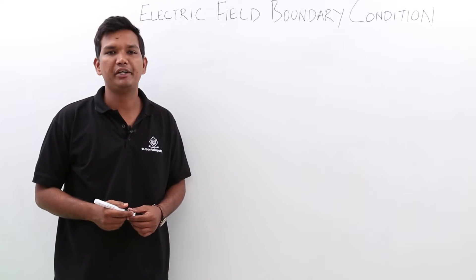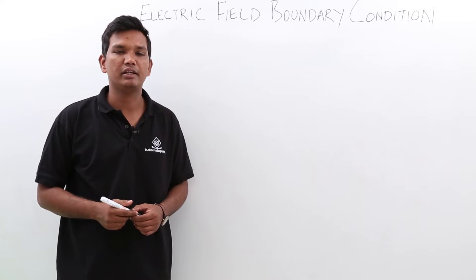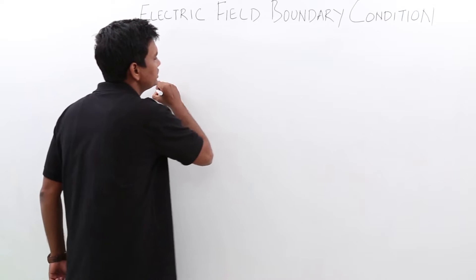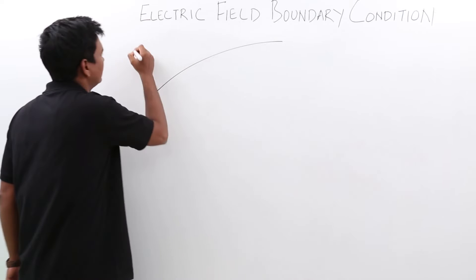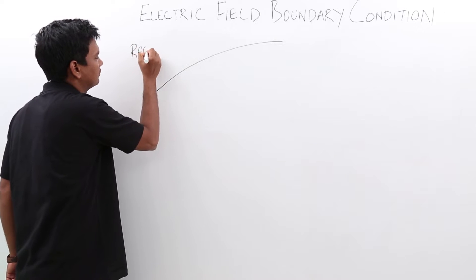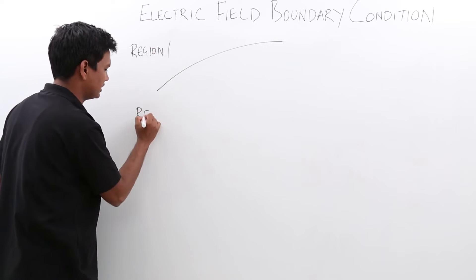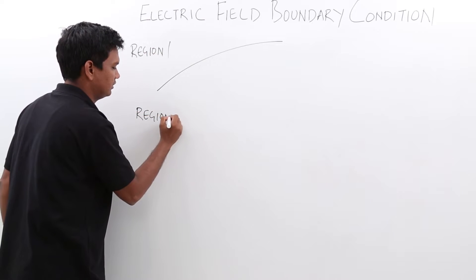In this class, we will try to find out the boundary condition in case of electric field. What we are going to do is, we are going to take two regions. Let me call this region 1 and let me call this region 2.